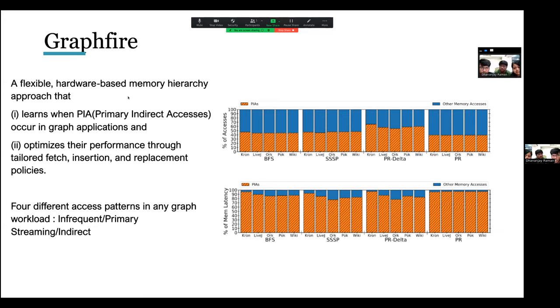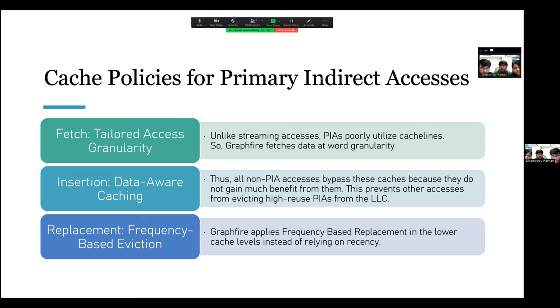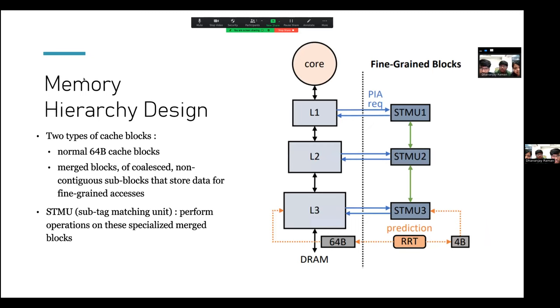Additional thing that we explored during the research was this hardware-based memory hierarchy approach Graphfire, which is probably the state-of-the-art that uses just hardware for this optimization. The basic idea learns the instructions which call for indirect accesses and optimize the performance through tailored fetch insertion and replication policies. At the high level, there are four kinds of access patterns: infrequent, primary, and streaming indirect patterns. It implements a re-reference table, which learns which instructions are responsible for what type of access pattern and it incurs a negligible hardware overhead. The idea for cache policy implementation for these indirect accesses is tailored access granularity, data-aware caching, and frequency-based eviction. The memory hierarchy design implements two types of cache blocks: a normal 64-byte cache block and a 64-byte cache block which is a merged block of coalesced non-contiguous sub-blocks that store data for fine-grained accesses. It also implements a sub-tag matching unit, which performs its operations on specialized merge blocks.